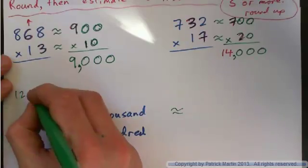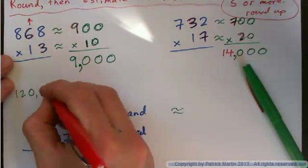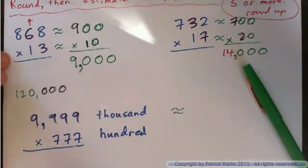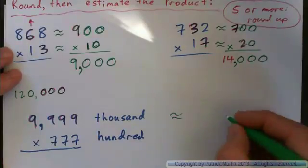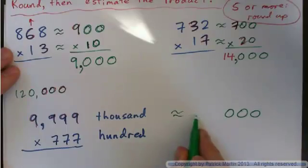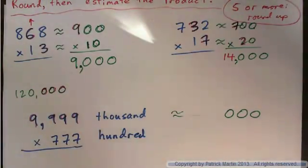a thousand doesn't just have to be something that has one digit here. Like, let me show you this. One hundred twenty thousand is a multiple of one thousand, simply because it has three zeros at the end of it. So, whatever happens, this number has to have three digits at the end. Just as long as it has three digits at the end, it is rounded to the thousand.